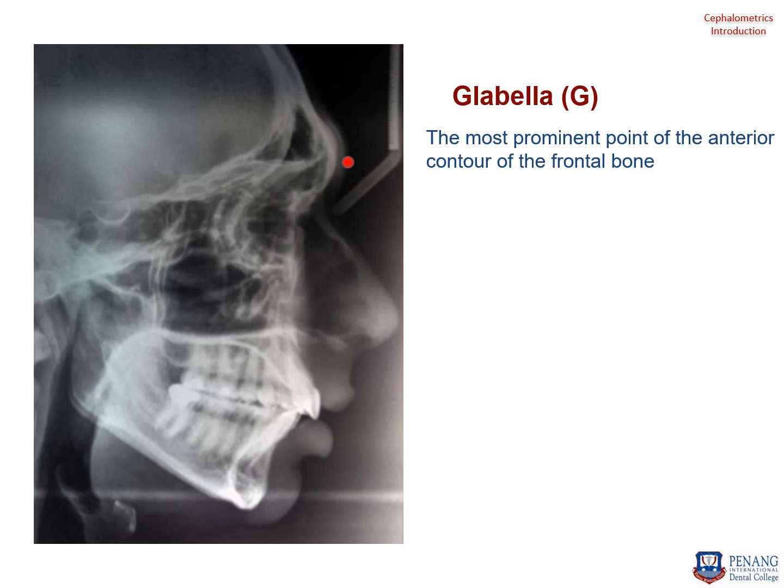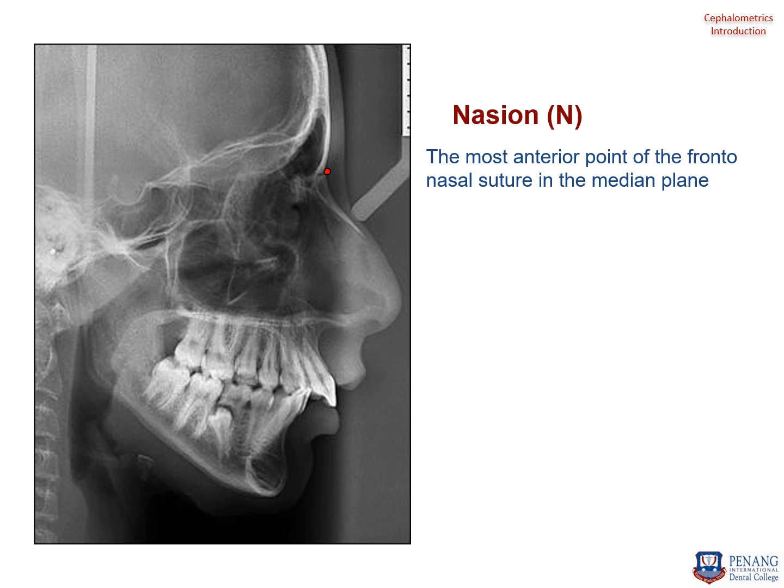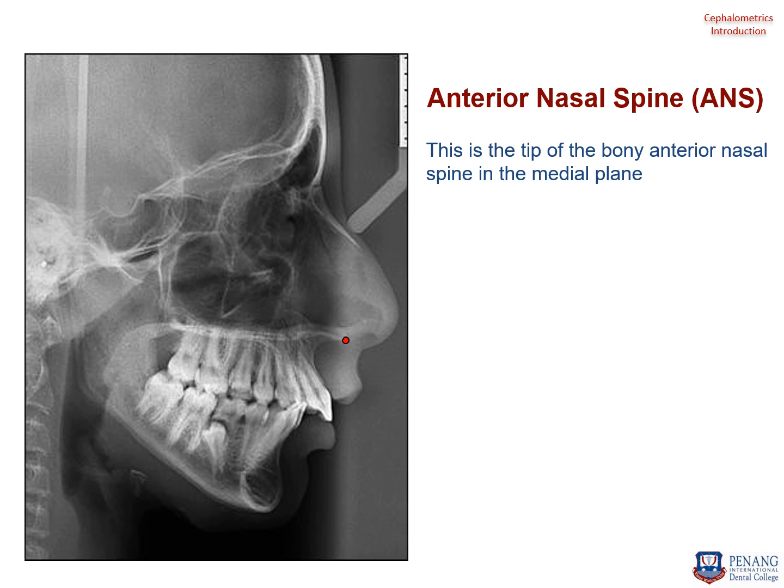Starting with hard tissue landmarks: Glabella is the most prominent point on the anterior contour of the frontal bone. If you identify the frontal bone on the lateral cephalogram, you can easily discern where glabella is. Nasion is the most anterior point of the frontal-nasal suture in the median plane — the suture between the frontal bone and the nasal bone at the root of the nasal bone. Anterior nasal spine is the tip of the bony anterior nasal spine in the medial plane.